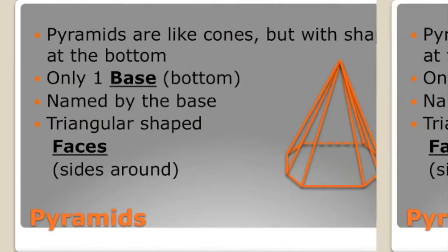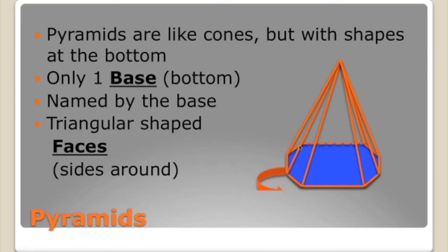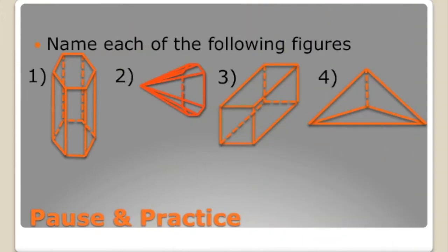How about this one? It all depends on the shape of the base. If we look at the base, we can see it has one, two, three, four, five, six, seven, eight sides. Since it has eight sides, that's an octagon, so we would call this an octagonal pyramid. And because the base tells us how many faces the pyramid has, it has eight faces. Now here's your pause and practice — pause the video, and when you're done, unpause it. Your answers will be displayed after a countdown.